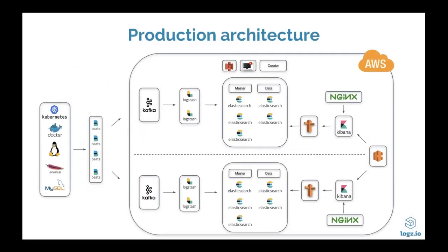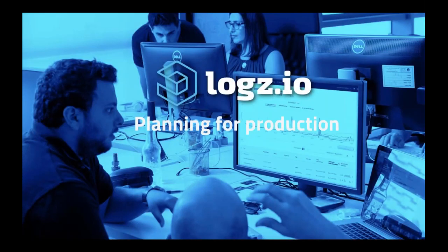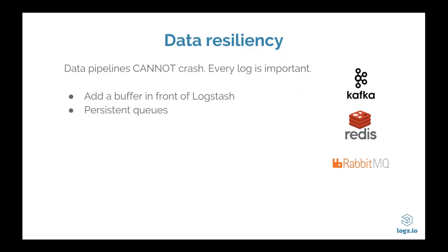Open source software is the go-to option for many teams, and log management is no exception. While proprietary tools like Splunk serve about 15,000 companies, the number of teams using the ELK stack dwarfs that. The components have been downloaded over 100 million times since 2005, and Elasticsearch is the second most downloaded open-source software after only the Linux kernel, with over 10 million pulls on Docker Hub.